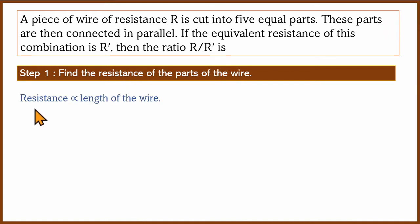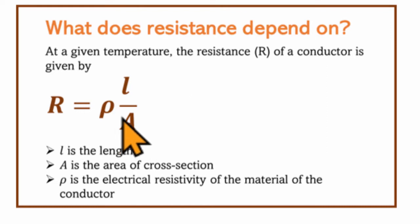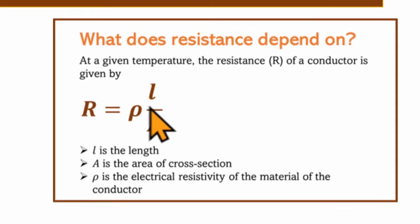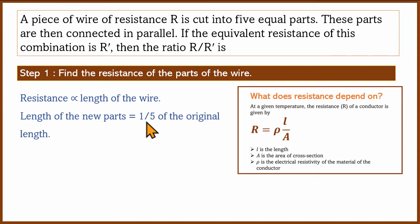This formula depends on the relationship: what is resistance? It is directly proportional to length. If the length changes, the resistance changes proportionally. The total length is divided into 5 equal parts, so each part has a length of 1/5 of the original length. For example, if the original length is 1 meter, each part is 1/5 of 1 meter.